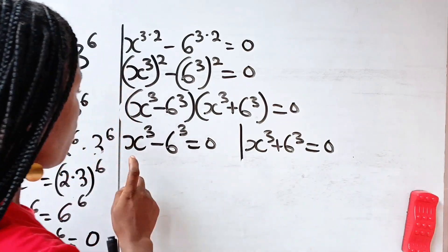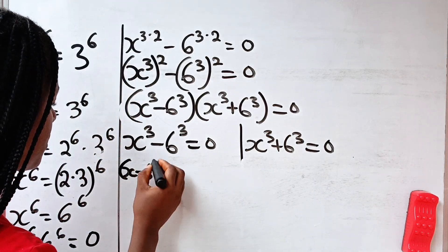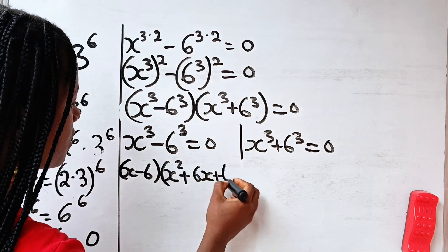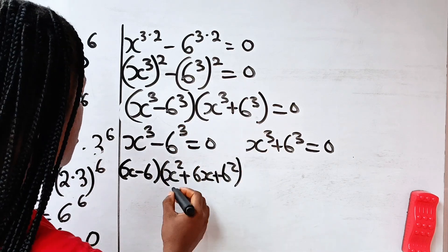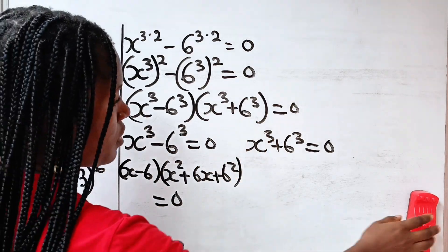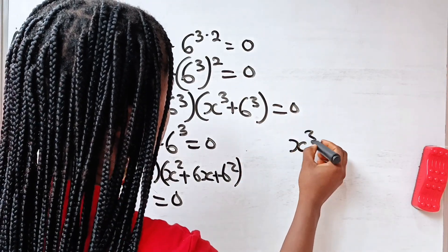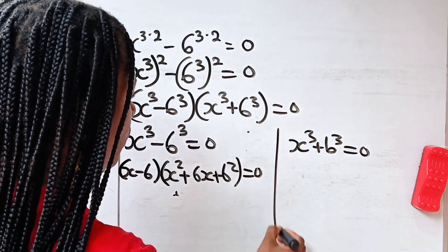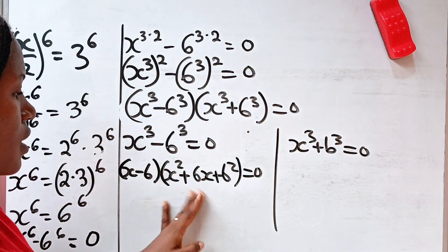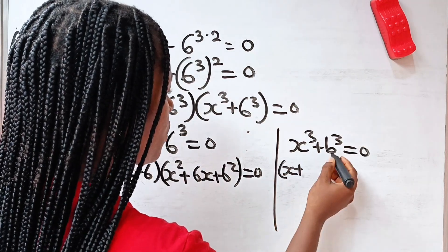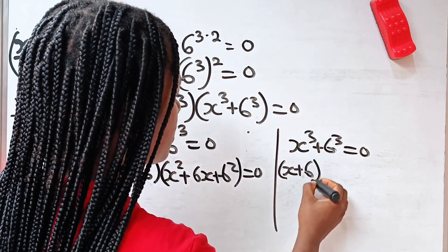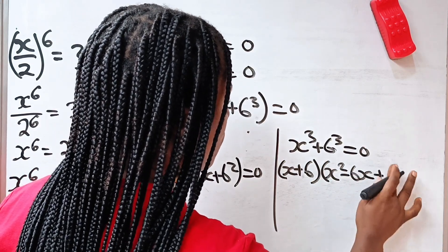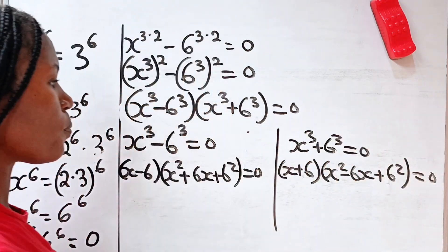For x cubed minus 6 cubed, it expands to x minus 6 multiplied by x squared plus 6x plus 6 squared, and this equals 0. For x cubed plus 6 cubed, it expands to x plus 6 multiplied by x squared minus 6x plus 6 squared, and this also equals 0.